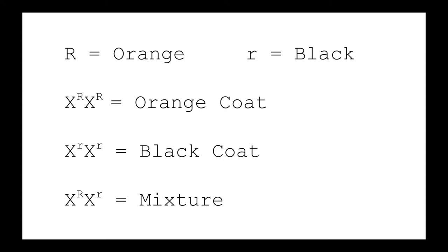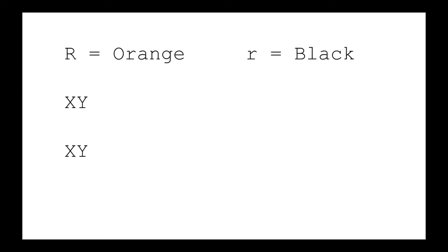However, for males, there are only two possible genotypes. Big R, Y would lead to an orange coat. Little r, Y would lead to a black coat.